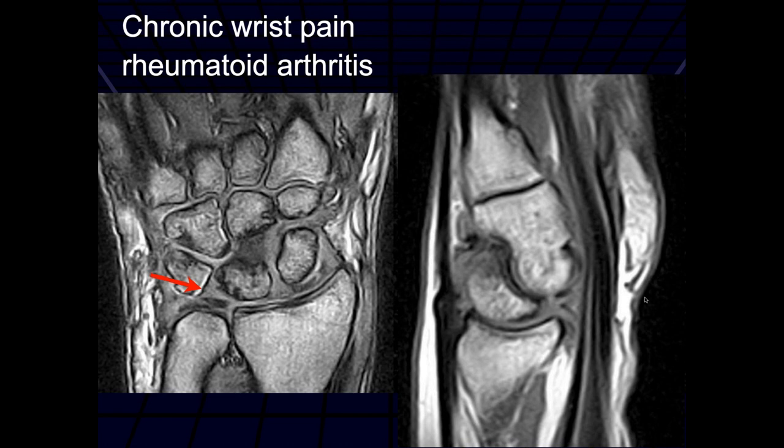The lunate is dorsally angulated, with foreshortening of the wrist and a scapholunate ligament tear. This patient had trauma — a scapholunate ligament tear, dorsal tilt, foreshortening of the wrist, and actually had a lunotriquetral tear.